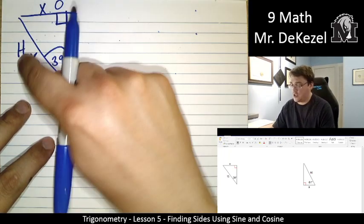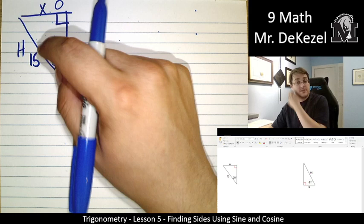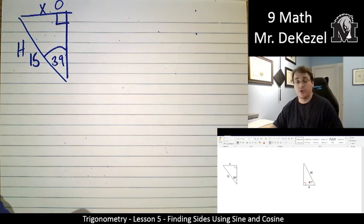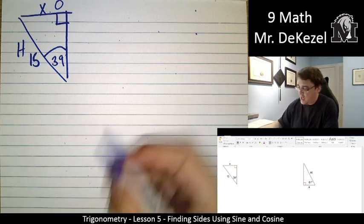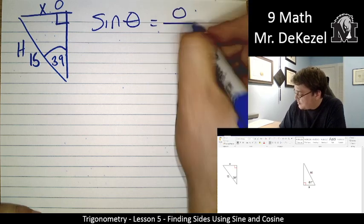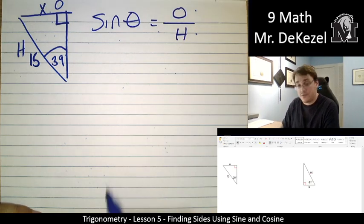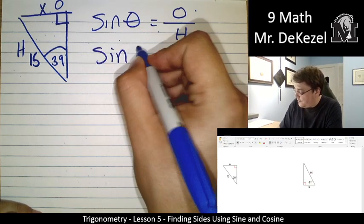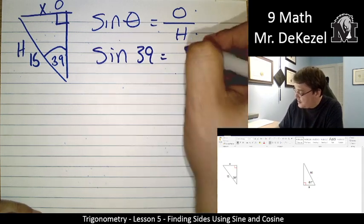We have opposite and adjacent... Sorry, opposite and hypotenuse. Let's try to think of which ratio we would use. SOHCAHTOA. So, O and H are with sine. So, that means that sine of theta is equal to opposite over hypotenuse. Sine of 39 is equal to... Opposite is our unknown. Hypotenuse is 15.